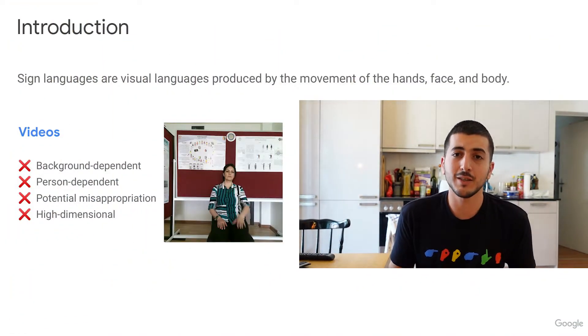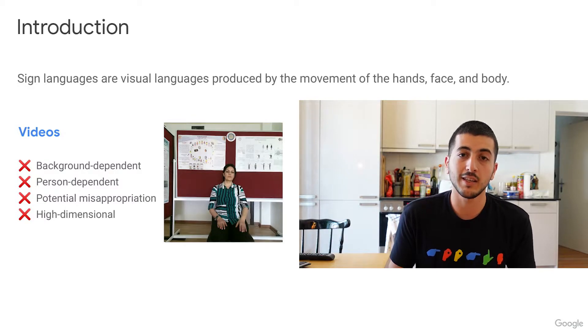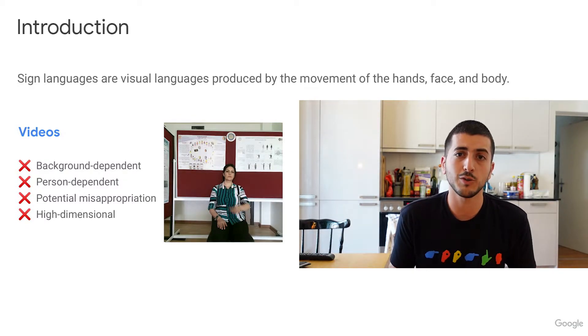Sign languages are visual languages produced by the movement of the face, hands and body. When processing sign language data for recognition or translation, one usually works with videos. These videos can include various people of different backgrounds in different locations and different camera angles, and a good translation system has to abstract all that information in order to generalize to unseen videos.